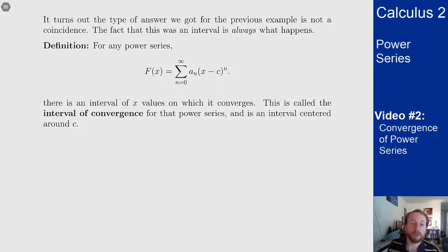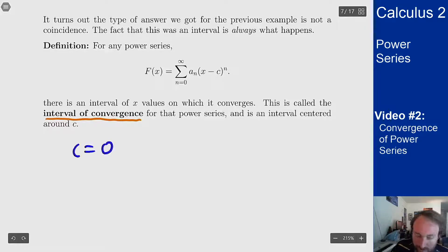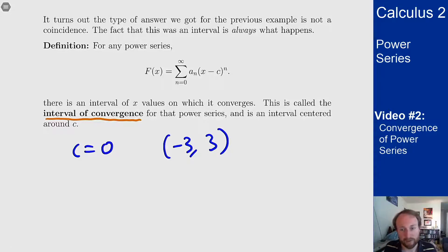So here's a definition. For any power series of this form, there is an interval of x values on which it converges. This is called the interval of convergence for this power series and is always an interval centered at c. In the last example our c was 0 and our interval was minus 3 to 3 which is in fact centered at c because it goes the same distance to the left and right about the point c.